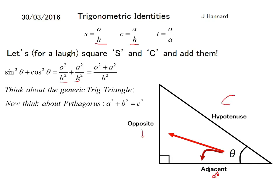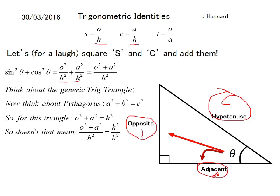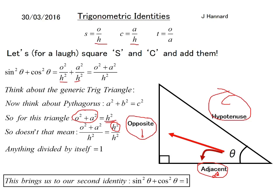That means if we square this and square that, we should get that squared. So O squared plus A squared must equal H squared in this instance. Doesn't that mean that O squared plus A squared over H squared must equal H squared over H squared? We can replace this O squared plus A squared with an H squared. We know that anything divided by itself is just 1. So that brings us to our second trigonometric identity, which is any sin squared theta added to the cos squared of the same theta will equal 1.